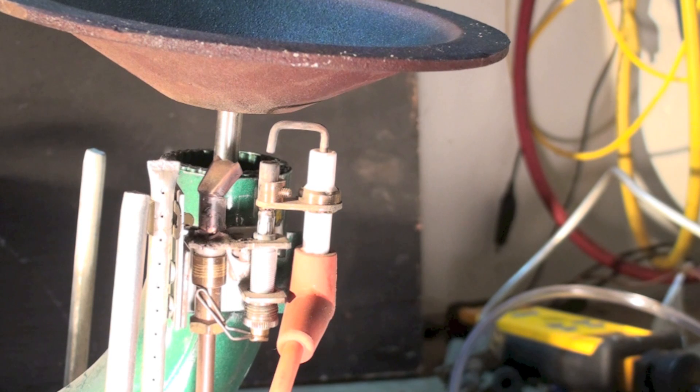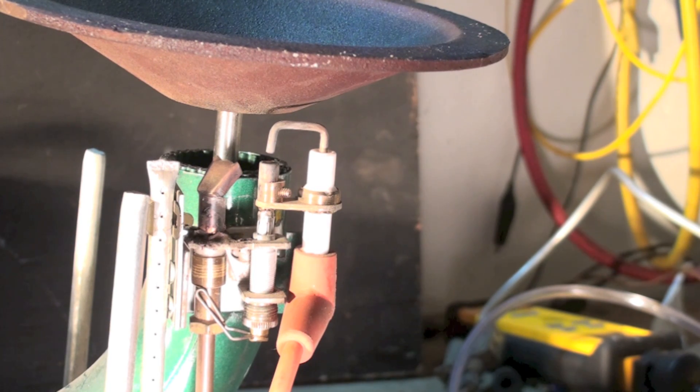Sometimes on these old conversion burners you'll have a gas valve fail. You got to replace the gas valve and you can't get the original ones because a lot of the older ones used a slow opening and slow closing valve. You can get those valves but they don't always work like the old ones did.